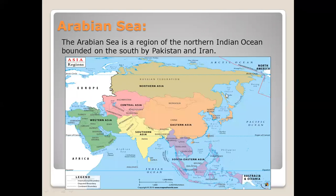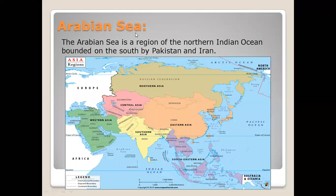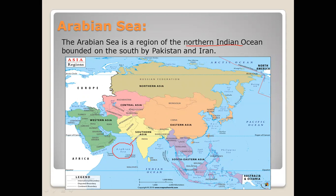Now let's discuss the Arabian Sea. The Arabian Sea is basically a part of the Indian Ocean which is to the south, near Pakistan, or you can say it is near Southern Asia. In this map you can see the Arabian Sea is between Southern and Western Asia. This map shows the Asian continent and its regions. You can see this marked area is Central Asia, which covers Kazakhstan, Turkmenistan, Uzbekistan, Tajikistan, etc.